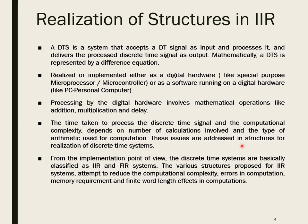These issues are addressed in structures for realization of discrete time systems. From the implementation point of view, discrete time systems are classified as IIR and FIR systems. The various structures proposed for IIR systems attempt to reduce computational complexity — that is, reducing the number of elements used for addition, multiplication, and delay also reduces errors in computation, memory requirements, and finite word length effects.